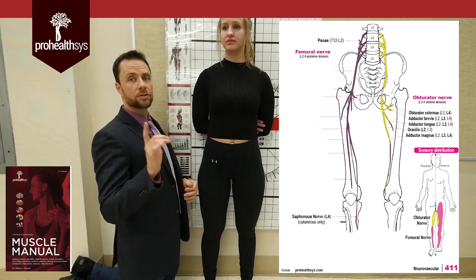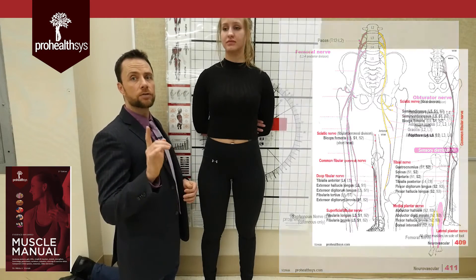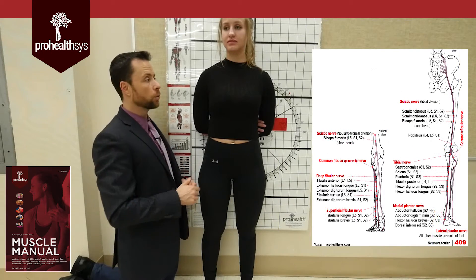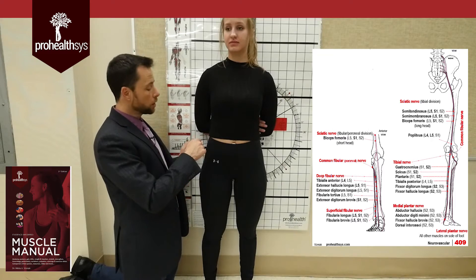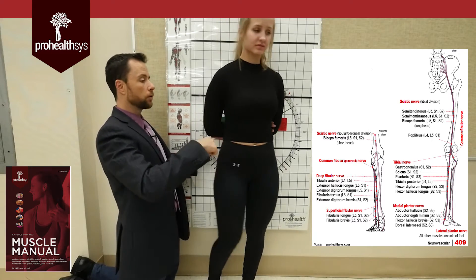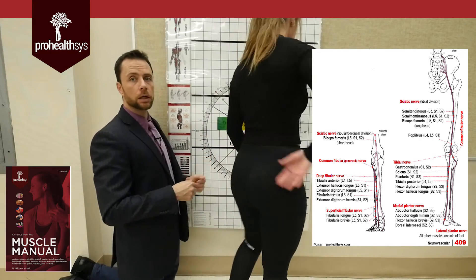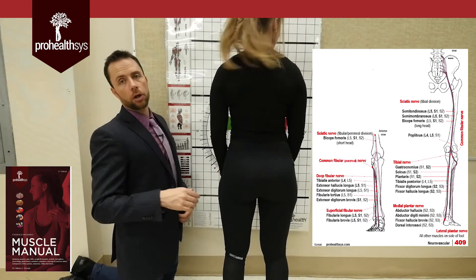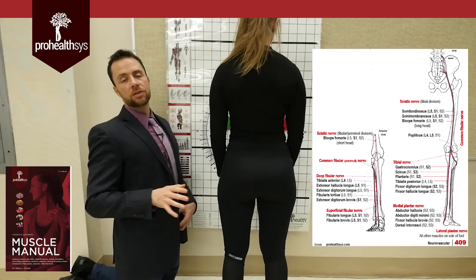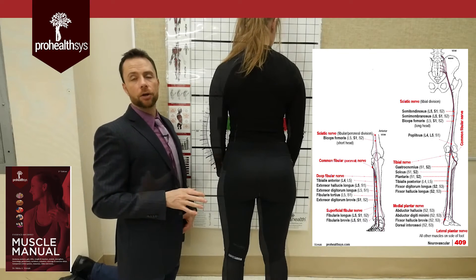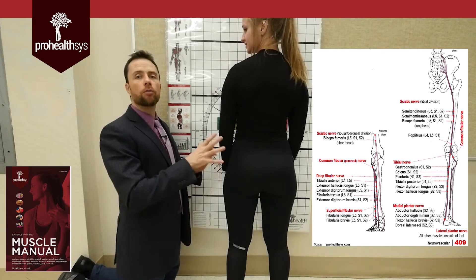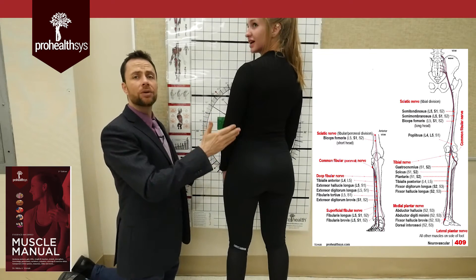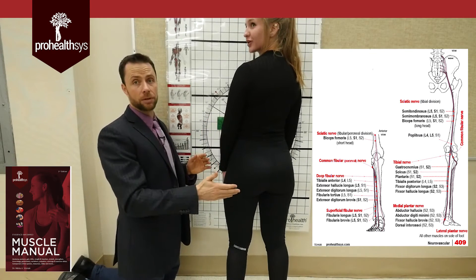The next nerve is the sciatic nerve, and this is a big deal, so let's make sure we understand this one well. We'll have Leanne spin around so we can see from the back how this one runs. The spinal levels that make up the sciatic nerve come from L4, L5, and depending on the source, all the way down to S3 potentially.